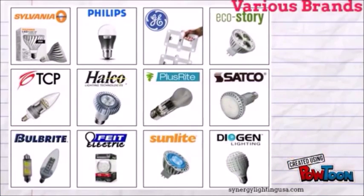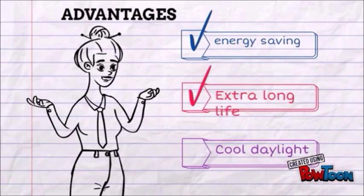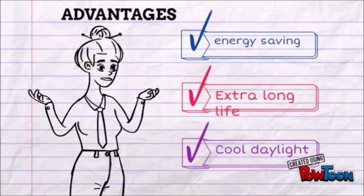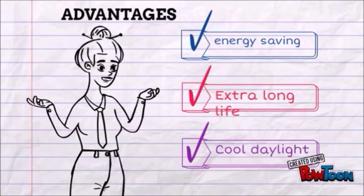There are various brands that manufacture these LED products. The advantages of using this product is it saves energy up to 80% and also has extra long life up to 25 years. Lamps such as LED lights are also cooler at daylight and non-dimmable.